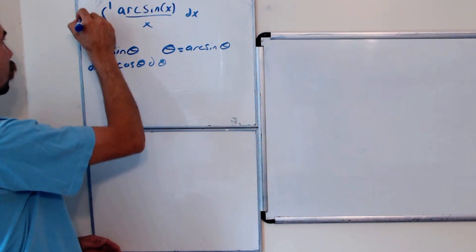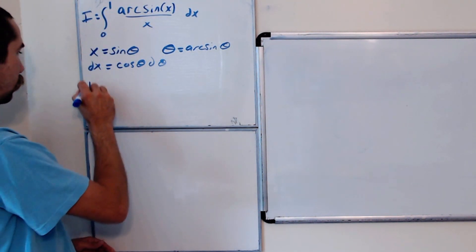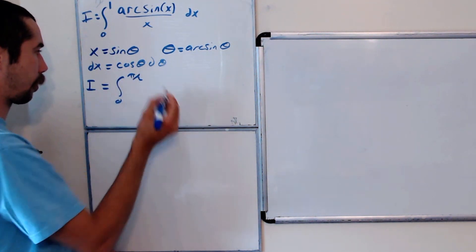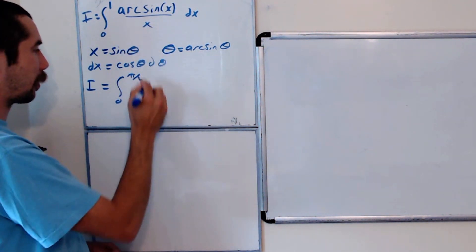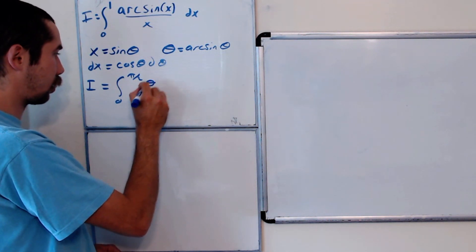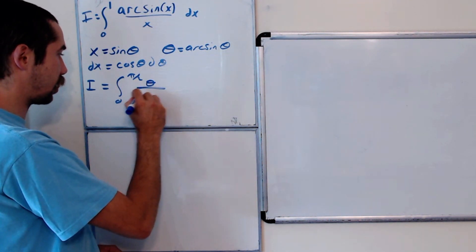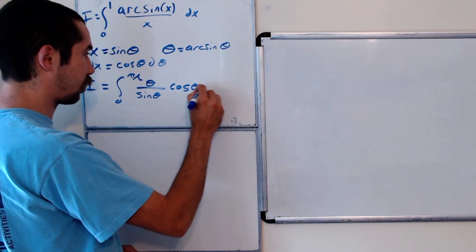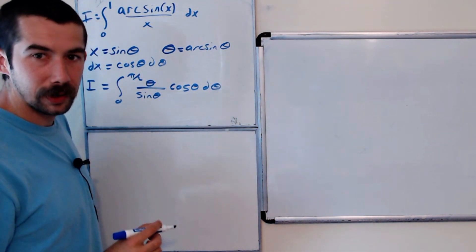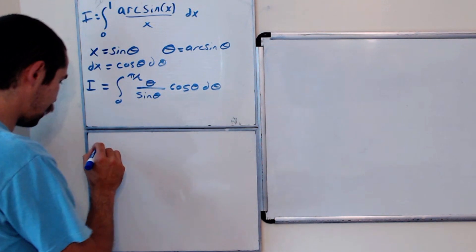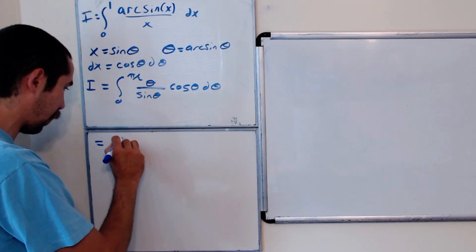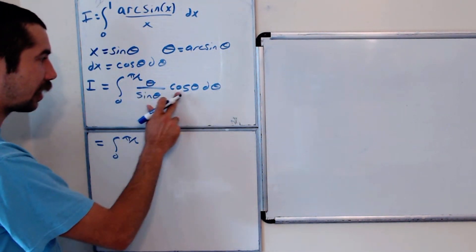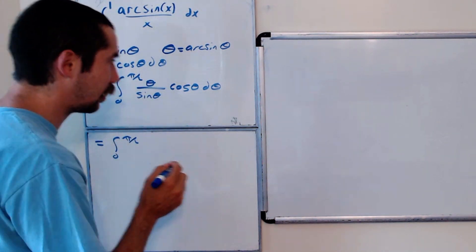So our integral — let's call this integral I — is going to be theta over sine theta times cosine theta d theta. We could rewrite this as the integral from 0 to pi over 2 of theta times cotangent of theta d theta.